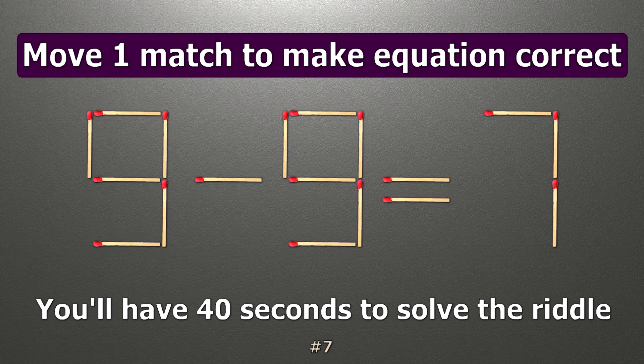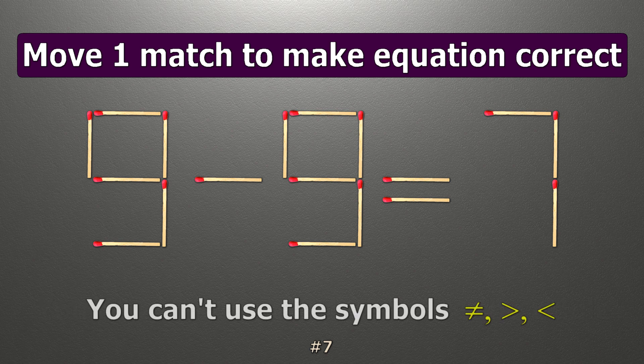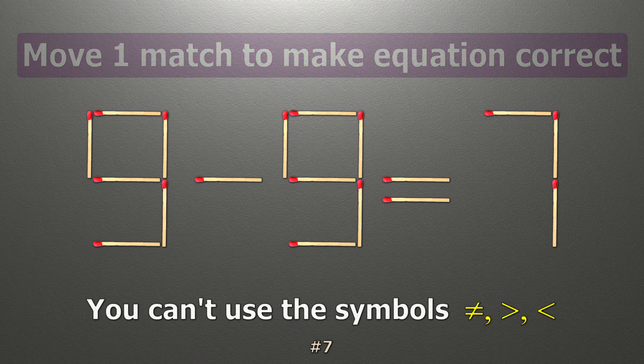We have the equality 9 minus 9 equals 7. Our equality is wrong. We need to move one match to make our equality correct.